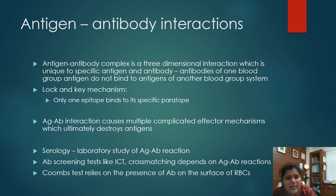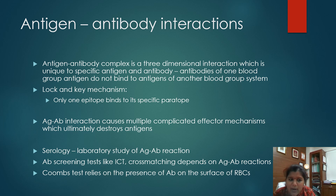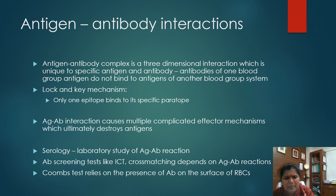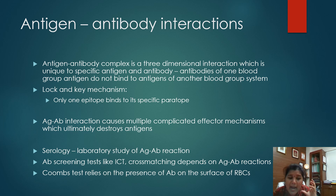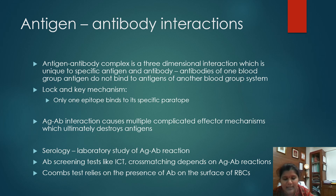Coming to antigen-antibody interaction — an antigen-antibody complex is a three-dimensional interaction unique to a specific antigen and antibody. Antibodies of one blood group system do not bind with the antigens of another blood group system. This three-dimensional complex can be called a lock-and-key mechanism — only one epitope binds to a specific paratope. Antigen-antibody reaction causes multiple complicated effector mechanisms which ultimately destroy the antigen. In blood banking, the laboratory study of antigen-antibody reactions is called serology. Antibody screening tests like ICT, cross-matching, and the Coombs test all depend on antigen-antibody interaction.